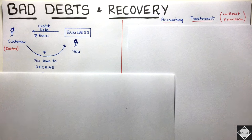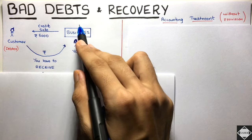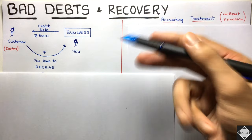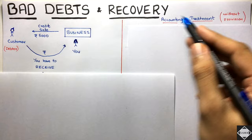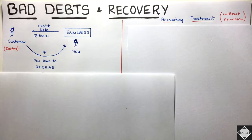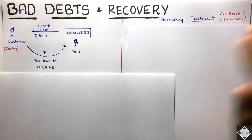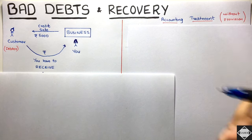Welcome back to Sahab Academy. Today in this video we are going to understand the concept of bad debts and recovery of bad debts, and also the accounting treatment of both of these things without maintaining the provision for bad debts — allowance for receivables — without maintaining that, how we have to do the accounting treatment.